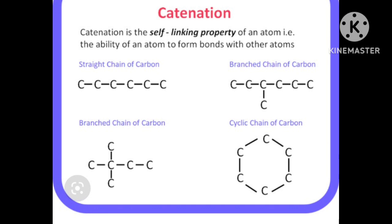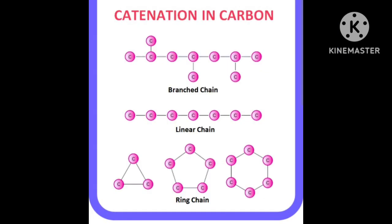Catenation is the self-linking property of an atom—the ability of an atom to form bonds with other atoms. This includes straight chain compounds like hexane, branched chain compounds like isoheptane and neohexane, and cyclic chain compounds like cyclohexane. Examples include linear chains or ring chains.